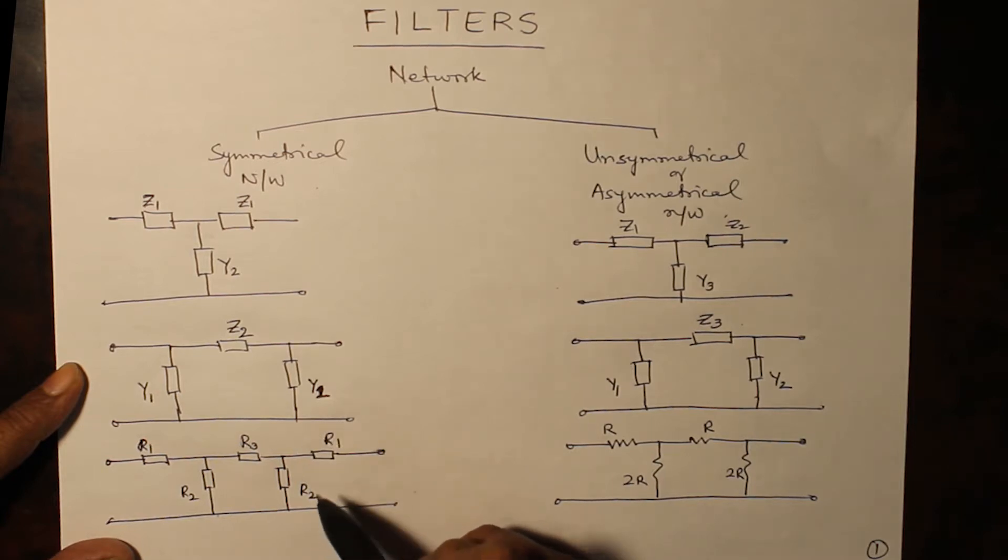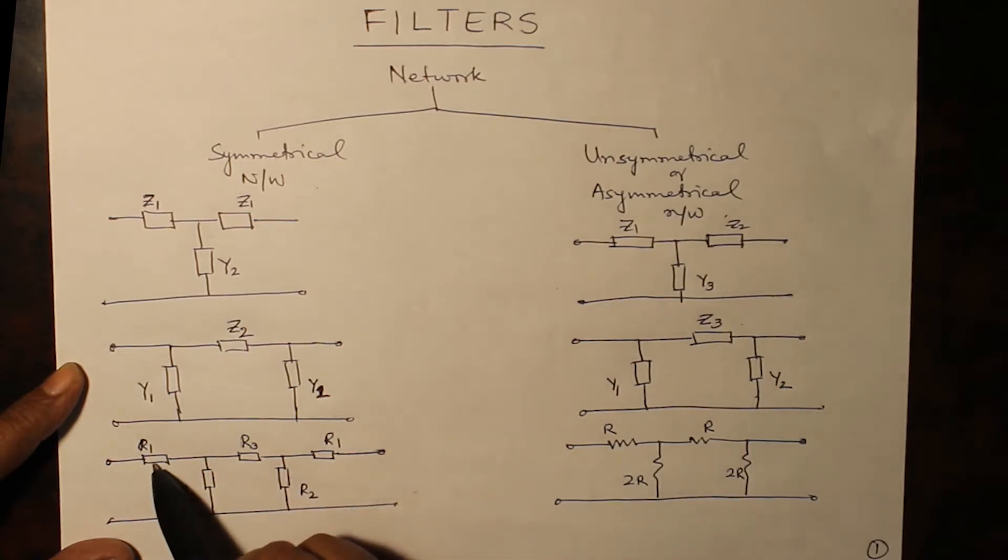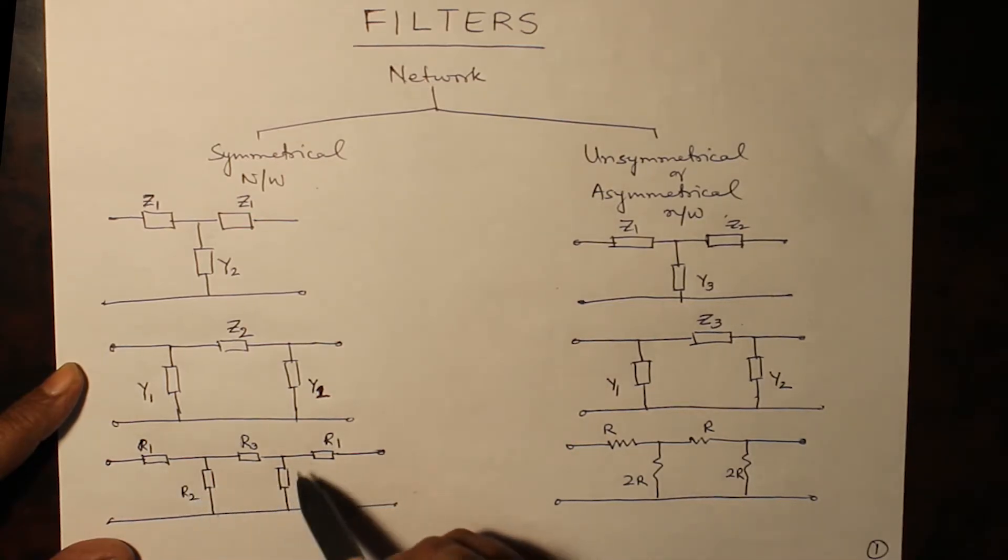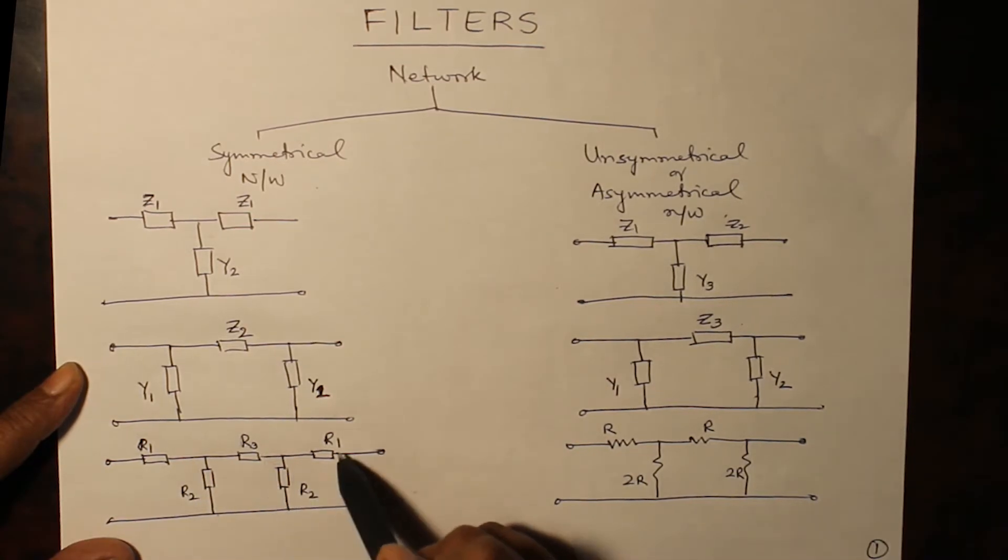This is not a ladder network but one more element has been added, R1 here, the starting resistance and then R2 here, then R2 here, R3 here and R1 here. Then it becomes a symmetrical network.